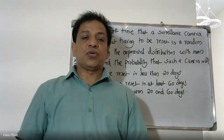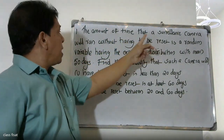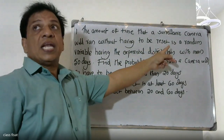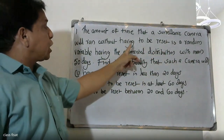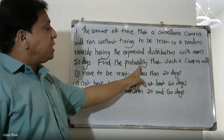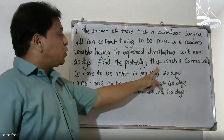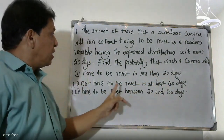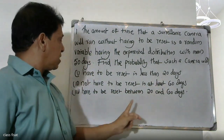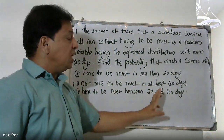Good morning, students. The amount of time that a surveillance camera will run without having to be reset is a random variable having the exponential distribution with a mean of 50 days. Find the probability that such a camera will have to be reset in less than 20 days. Second question: not having to be reset in at least 60 days. Third question: having to be reset between 20 and 60 days.